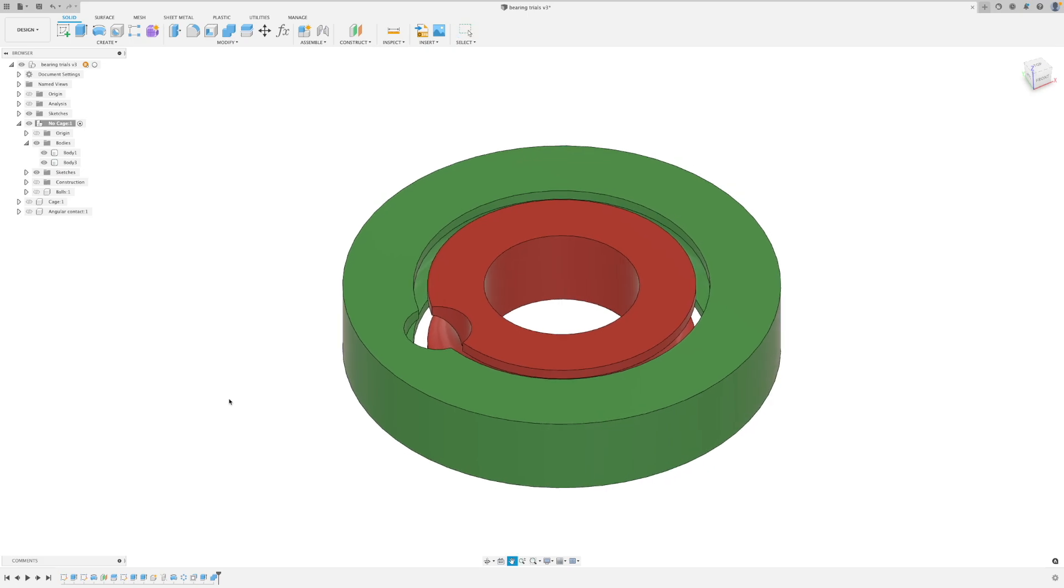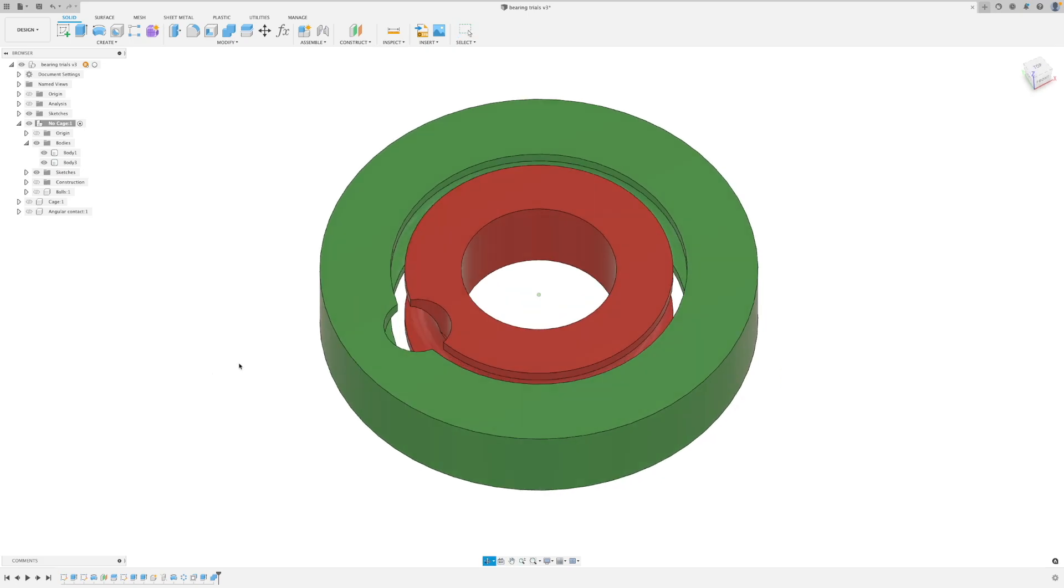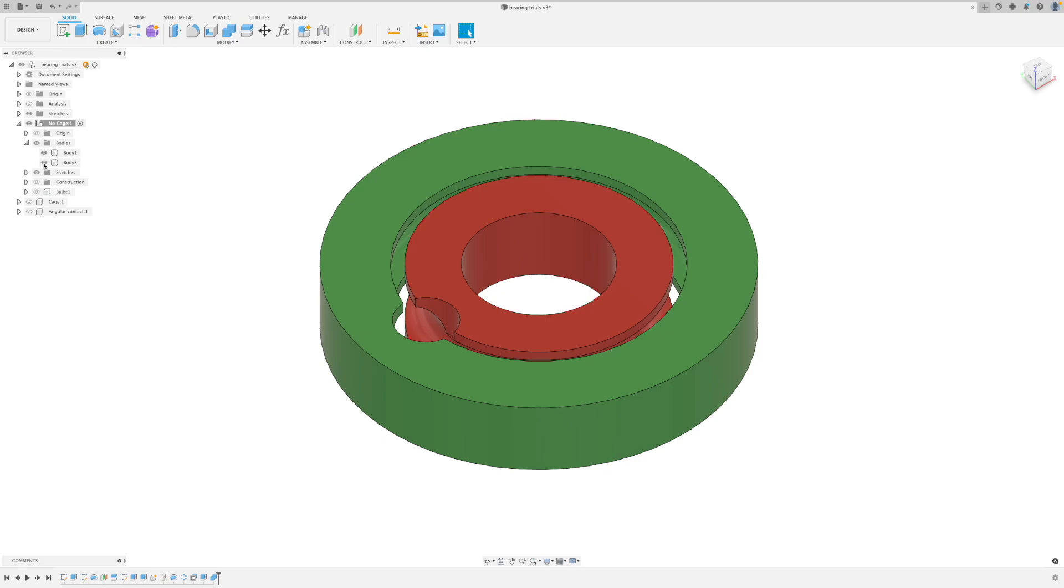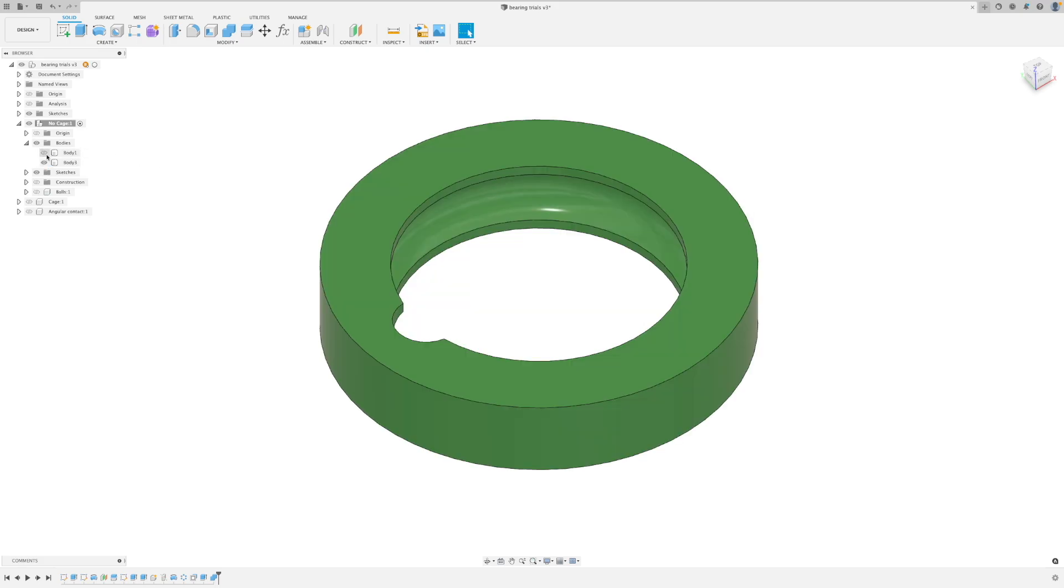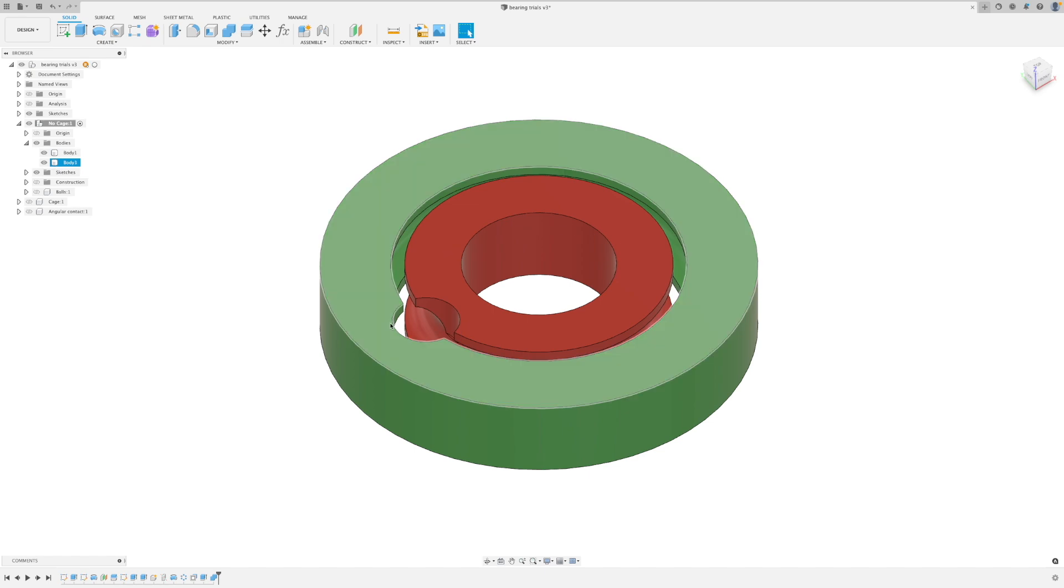Jumping straight into Fusion 360, I've knocked up this quick prototype. It's nice and small, so it should print quickly. We have an inner shell and an outer shell, and there's a small hole in the top to insert the bearings through.